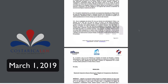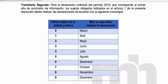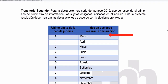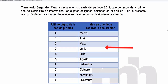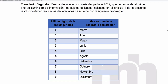The filing deadline is going to depend on the last digit of your corporation identification number known as Cedula Jurídica. If your ending number is zero, you file in March. If it ends in one, you file in April. If it ends in two, in May, and so forth according to the following schedule.